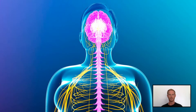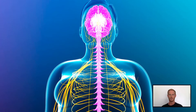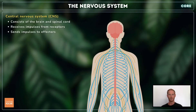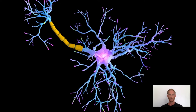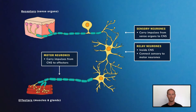The central nervous system consists of the brain and spinal cord. These structures are known as coordinators as they receive and process information from receptors around the body. The peripheral nervous system consists of the nerves outside of the central nervous system that connect the brain and spinal cord to the rest of the body. There are three different types of neurons: sensory neurons carry impulses from the sense organs to the central nervous system, motor neurons carry impulses from the central nervous system to effectors, and relay neurons are found inside the central nervous system and connect sensory and motor neurons.